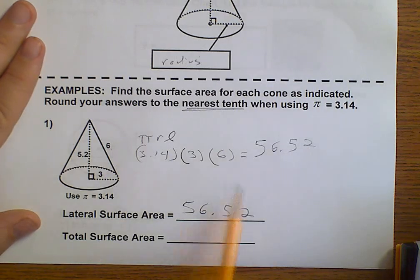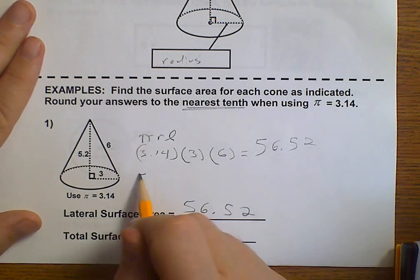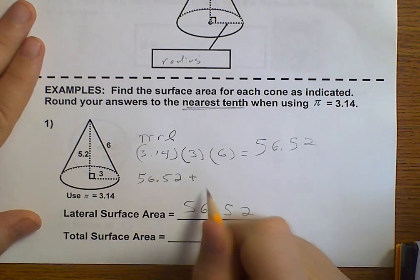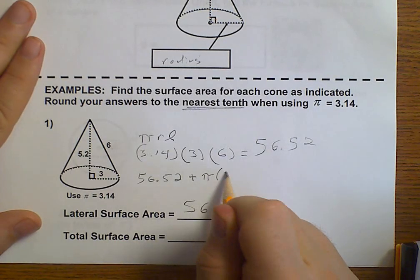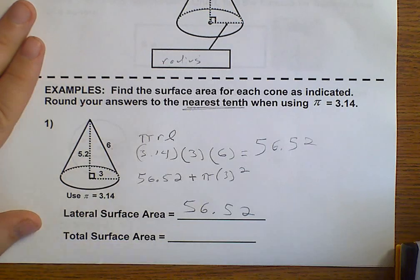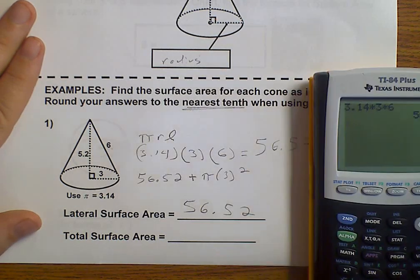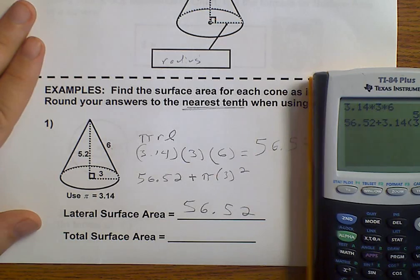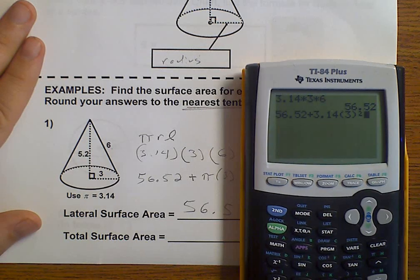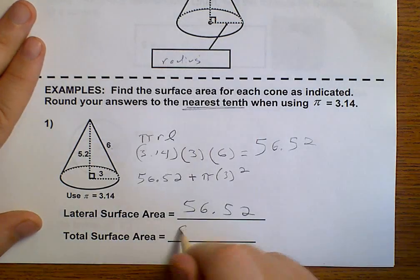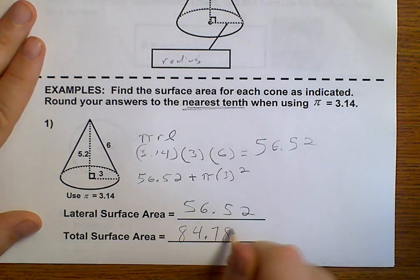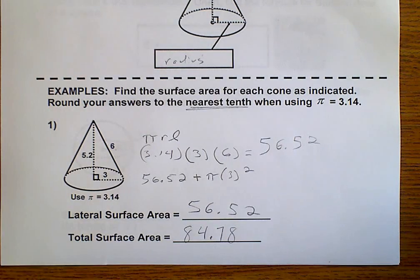Now for our total, we're going to start with our 56.52. And we're going to add pi times our radius squared. So, 56.52 plus 3.14 times our radius of 3 squared. It gives us 84.78. And that is the total surface area.